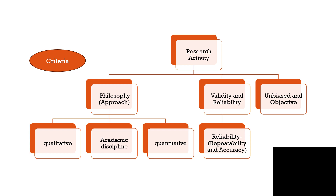दूसरा है validity और reliability। इनका इस्तेमाल तब होता है जब आप कोई नई चीज़ develop कर रहे होते हैं, जैसे कोई yoga tool या questionnaire। Validity यानि उसकी वैधता, और reliability का मतलब है repeatability और accuracy — कि आपने कितनी बार repeat किया और result कितना consistent आया।